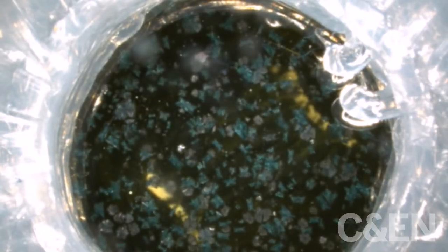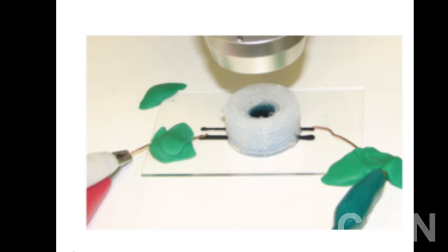In another demo, Cronin and coworkers made the reactor part of the reaction by printing electrodes into it. These electrodes, made of a conductive carbon black paste, enabled the reactor to perform electrochemistry.